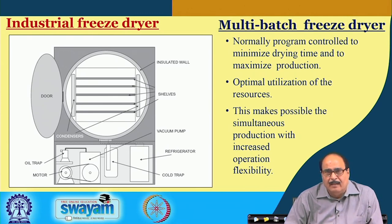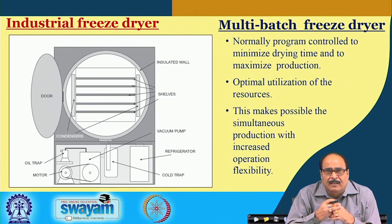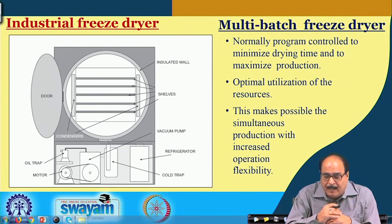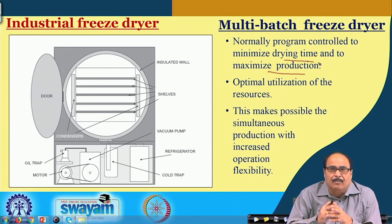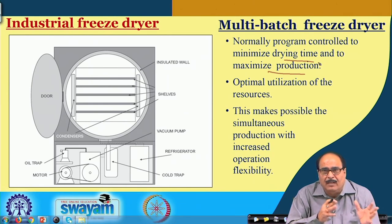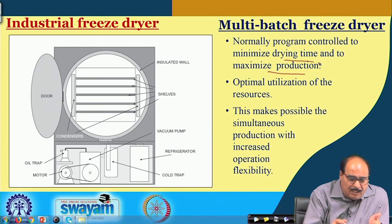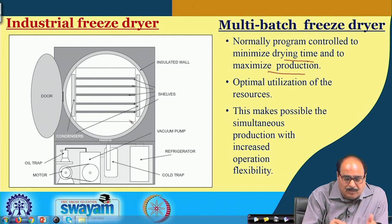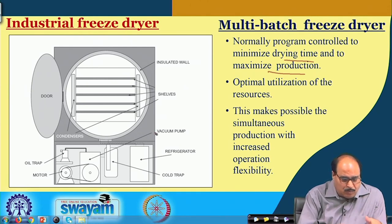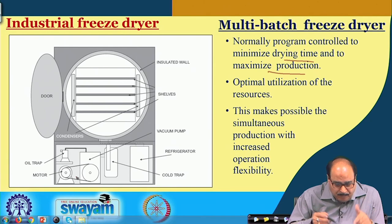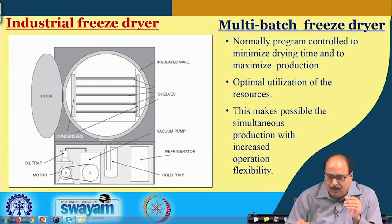Industrial freeze dryers may be of the multi-batch type, as seen in the first slide. These are normally programmed to minimize drying time and to maximize production, resulting in optimal utilization of resources and making possible simultaneous production with increased operational flexibility. The chamber has condensers and insulated valves to avoid heat loss. The shelves hold the product, and the system is provided with a vacuum pump, refrigeration for freezing, cold traps, and necessary instrumentation.